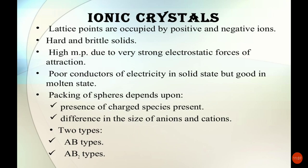In ionic crystals, positive and negative ions are the constituents. They are hard and brittle solids with high melting points due to very strong electrostatic forces of attraction. They are poor conductors of electricity in the solid state but good conductors in the molten state or aqueous solution. There are two types: AB type and AB2 type.